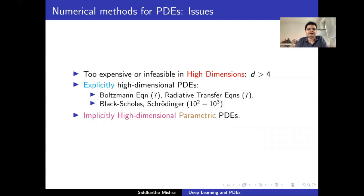There are two varieties. One is the so-called explicitly high-dimensional PDEs. For instance, the Boltzmann equation is seven-dimensional, and the radiative transfer equation is also seven-dimensional. You have Black-Scholes equations from mathematical finance, and Schrödinger's equation from chemistry, which can have hundreds to thousands of physical dimensions. On the other hand, in this talk we are going to focus on what are called implicitly high-dimensional PDEs, or parametric PDEs.